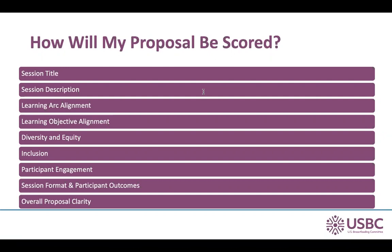Here are a couple of things to consider when reviewing these components for your presentation. Session title: how well does the title describe the session? Is it concise and informative? Session description: how developed is the session description? Does it capture the reader's interest? Learning arc alignment: how well does your session align with the learning arc you've selected, and how well has your session description articulated that connection? Conference objective alignment: each learning arc has associated conference objectives — how well does your session align with those objectives and demonstrate how they will be met?